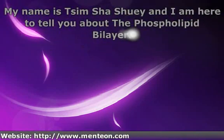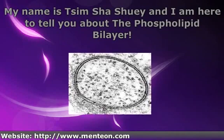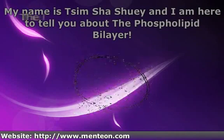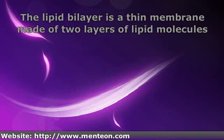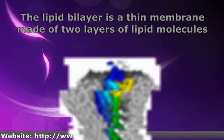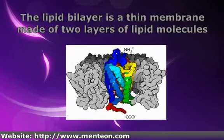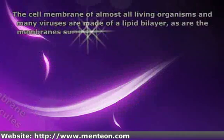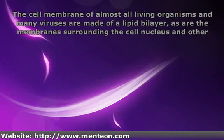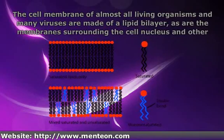My name is Tissom Shashuli and I am here to tell you about the phospholipid bilayer. The lipid bilayer is a thin membrane made of two layers of lipid molecules. These membranes are flat sheets that form a continuous barrier around cells. The cell membrane of almost all living organisms and many viruses are made of a lipid bilayer, as are the membranes surrounding the cell nucleus and other subcellular structures.